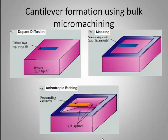Here is an example of bulk micro-machining. The first step is Doped Diffusion, where a P-type silicon layer is diffused. The second step is Masking — this is a non-etching mask made of silicon nitride. You can protect the portions you want by placing the mask over them.